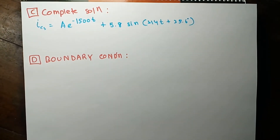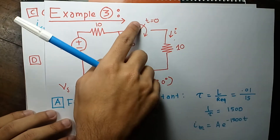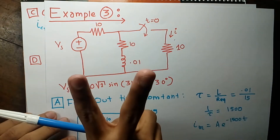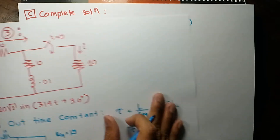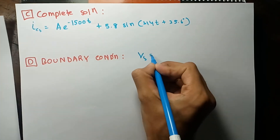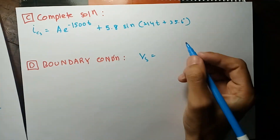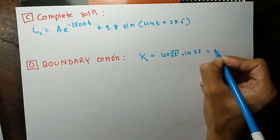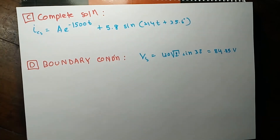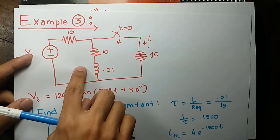Now we have to use our boundary condition very carefully. I go back to the first circuit. To use the boundary condition I need to know two things at t equals 0: the voltage source value and the inductor current value at t equals 0. We evaluate the voltage source value at t equals 0 by putting t equals 0, giving 120√2 sin(30°), which equals 84.85 volts. We also need to know the current through the inductor at t equals 0.